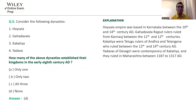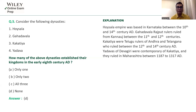Question 5 asks about four dynasties — Hoysala, Gahadavala, Kakatiya, and Yadava — and how many established their kingdoms in the early 8th century AD. Hoysalas' area was Dwarasamudra, between today's Chikmagalur and Mangalore. They were contemporary of Alauddin Khilji and were not from the early 8th century.